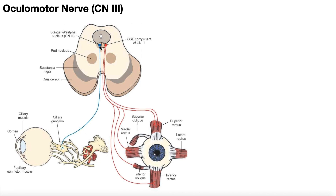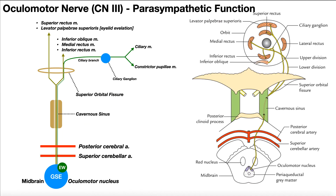But remember, there's also a parasympathetic component of the oculomotor nerve, and that's shown here in blue. That's what we're going to talk about in this video. We're going to begin by discussing the pathway for the parasympathetic part of the oculomotor nerve.